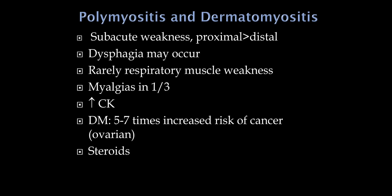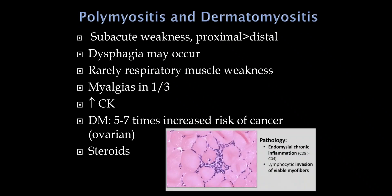For dermatomyositis in particular, there is a significantly increased risk of cancer — about five to seven times increased — including ovarian cancer and others. The mechanism is probably antigenic similarity between the muscle inflammation and the cancer. Both conditions respond to steroids. For polymyositis, we do a muscle biopsy mainly to rule out other things; the finding is lymphocytes invading individual muscle fibers, which is not highly specific.